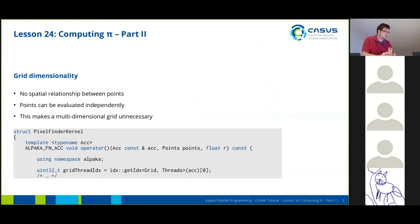In this case we've chosen a 1D grid despite having a 2D problem. This is because we have no spatial relationship between the points, so it's not really necessary to do this in a 2D way. The points can be evaluated independently of each other, which makes a multi-dimensional grid unnecessary.